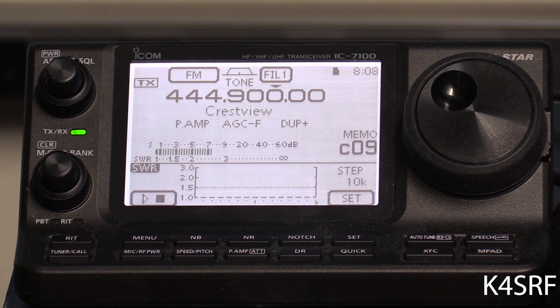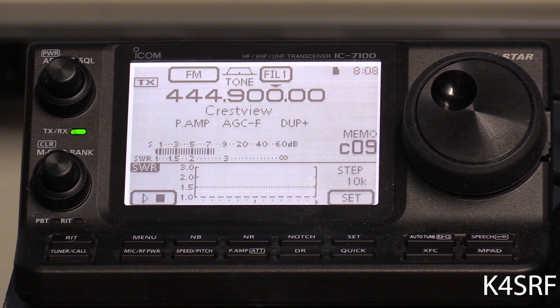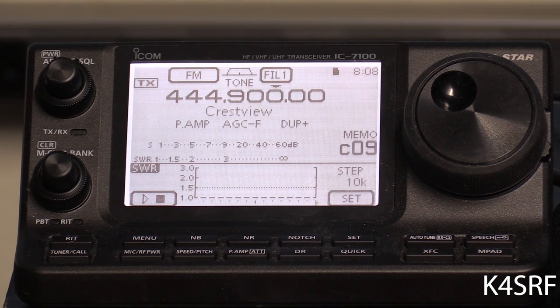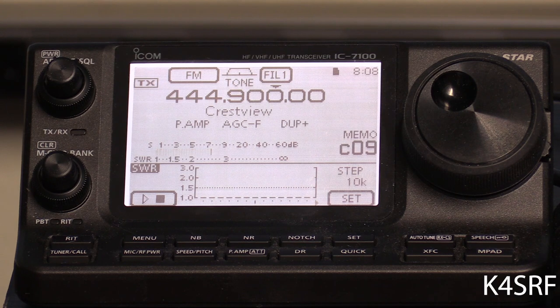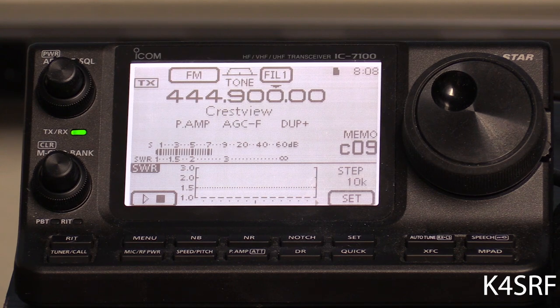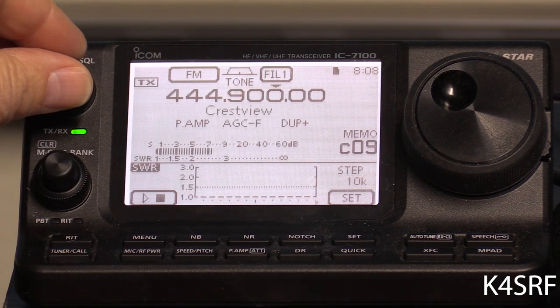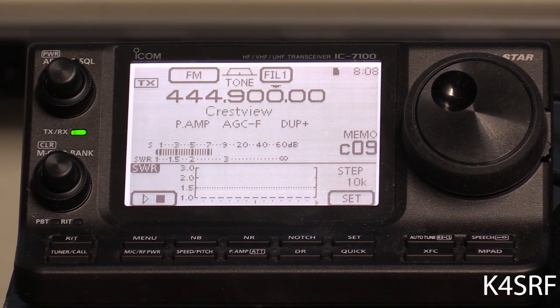As you can see, I've actually hit the Crestview repeater and I was not able to do that before with my base station previous antenna, the GP3. The GP9 obviously has better gain and this repeater is like 49, 50 miles away. So it is pushing the limit. It's still pushing the limit, but I'm actually making it now where previously I was not. Sounds pretty good.